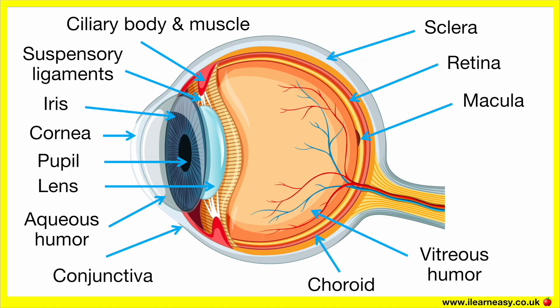Macula. This is the central part of the retina, responsible for sharp central vision. At the centre of the macula is the fovea — the sharpest vision point. The fovea contains only cones, which is why it gives the sharpest detail.